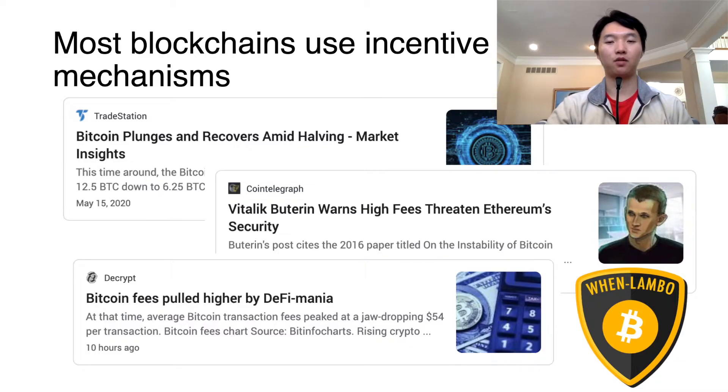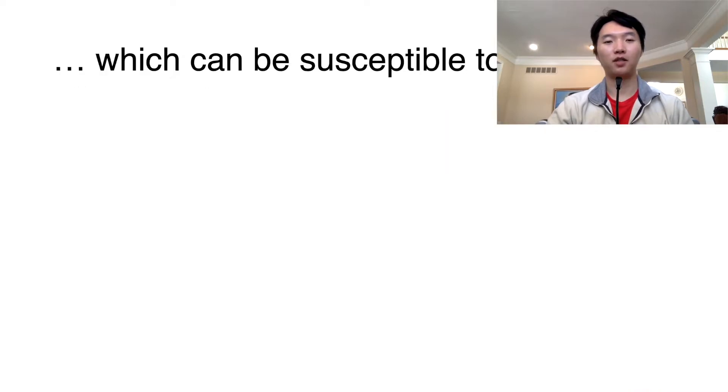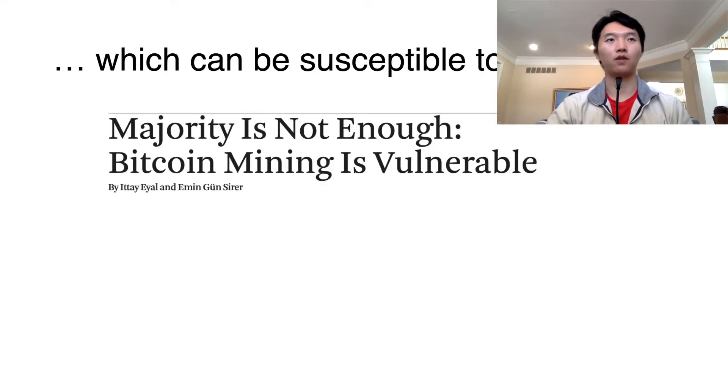Most blockchains like Bitcoin and Ethereum use incentive mechanisms. They need incentives to get people to validate transactions, which can be computationally expensive. However, these incentive mechanisms can be susceptible to attacks. First came the original selfish mining attack, and later more attacks were found.